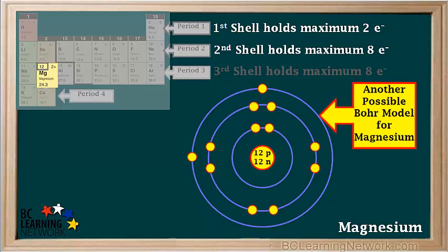Another possible model for magnesium shows the 2 electrons in shell number 3 as being unpaired and at right angles to each other. Still another possible model shows these 2 electrons opposite each other in the atom like this.